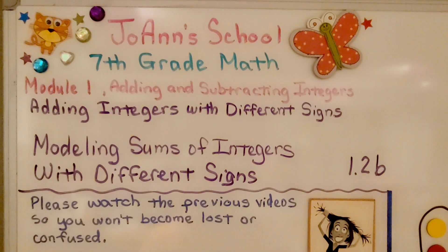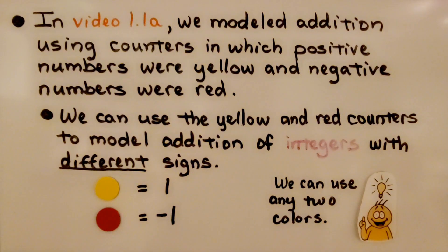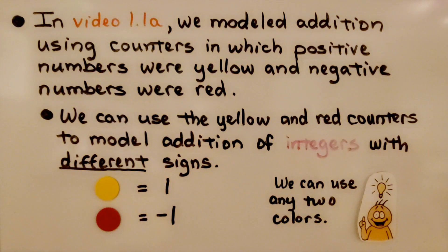Now let's learn about adding integers with different signs. This is modeling sums of integers with different signs, 1.2b. In video 1.1a we modeled addition using counters in which positive numbers were yellow and negative numbers were red. We can use yellow and red counters to model addition of integers with different signs.